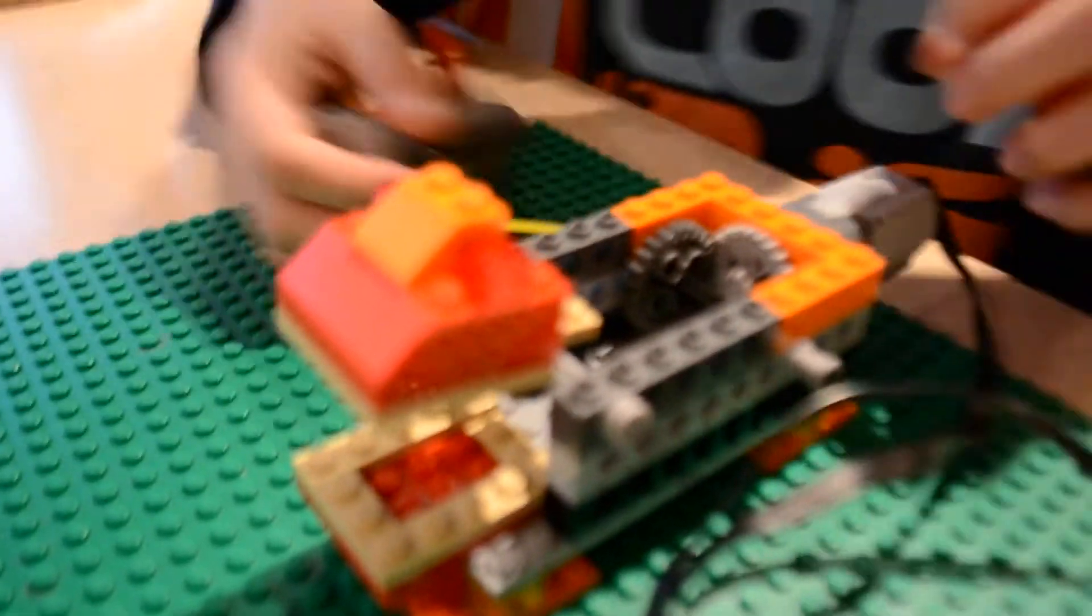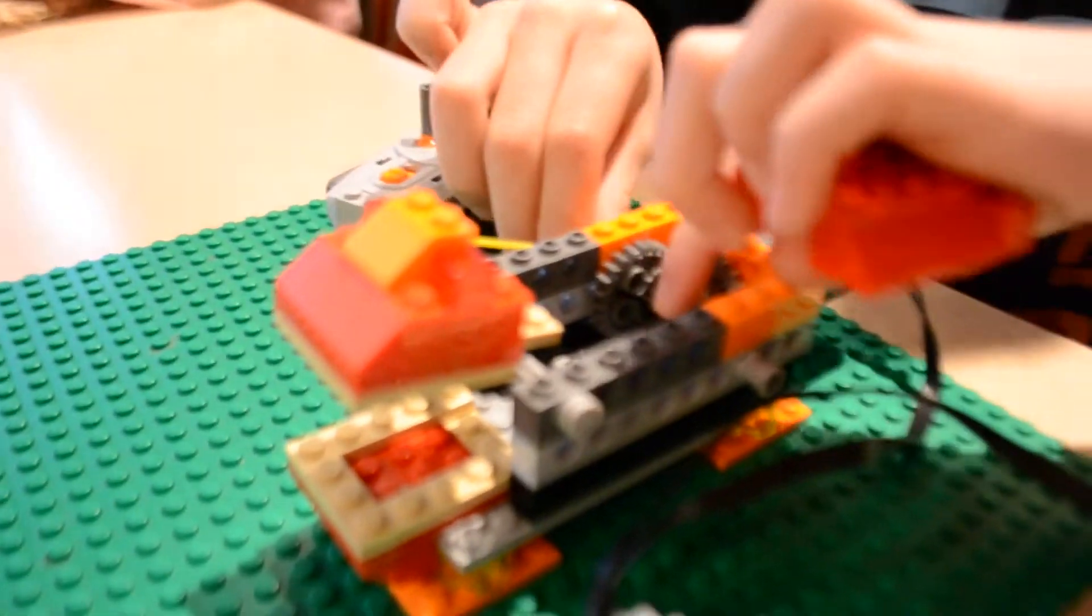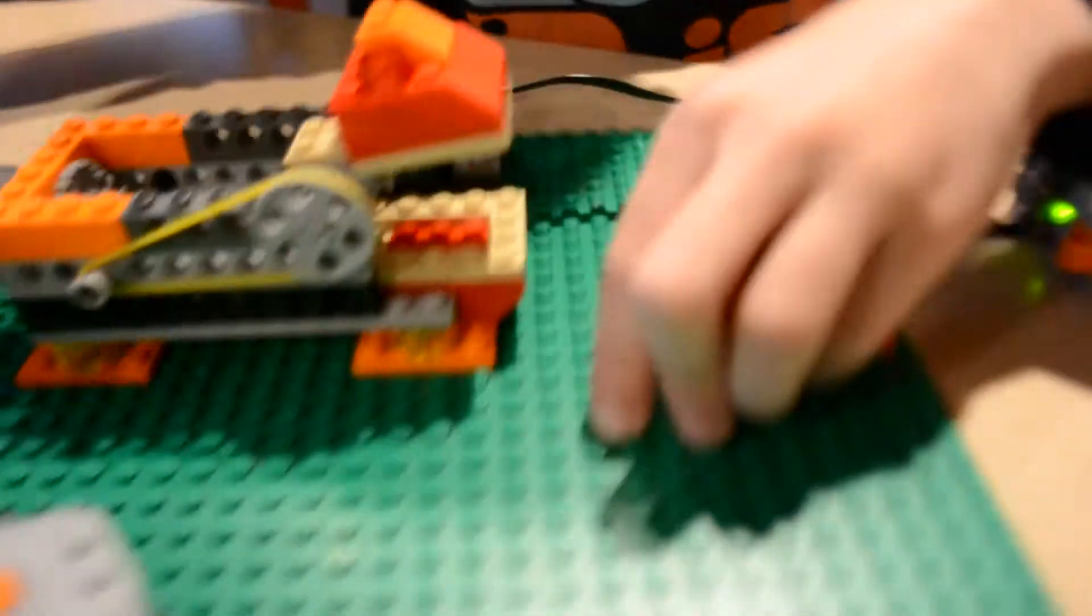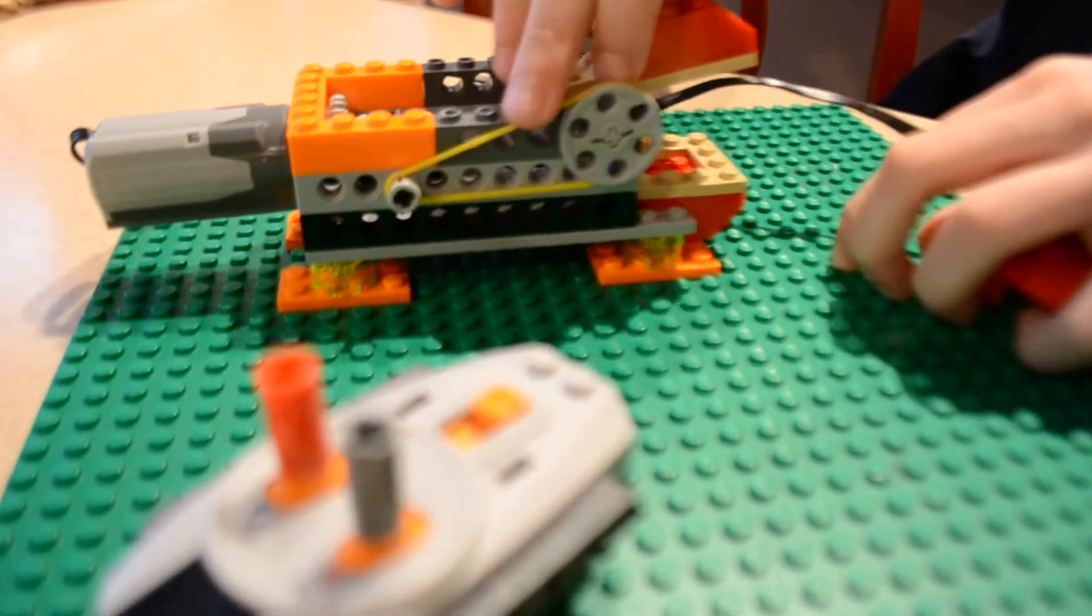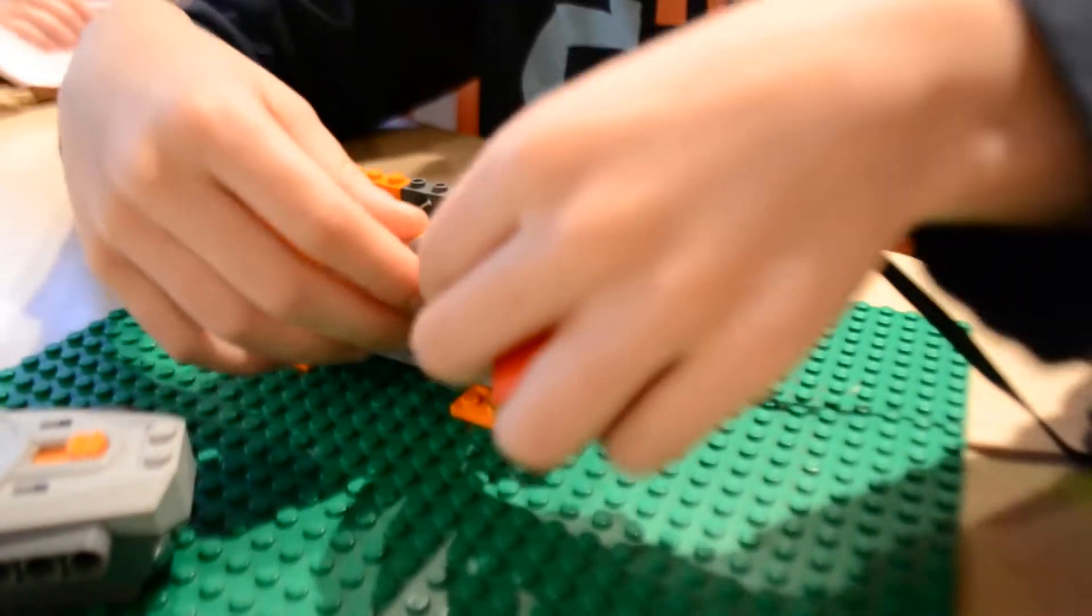And then there's an axle right here and it is connected to this part right here. Okay. With a rubber band that connects to the pole. Is it a plain rubber band? Yep. Okay.